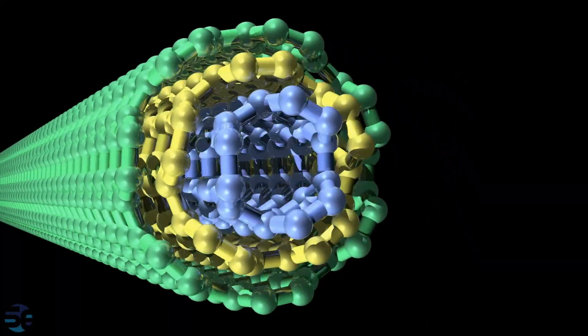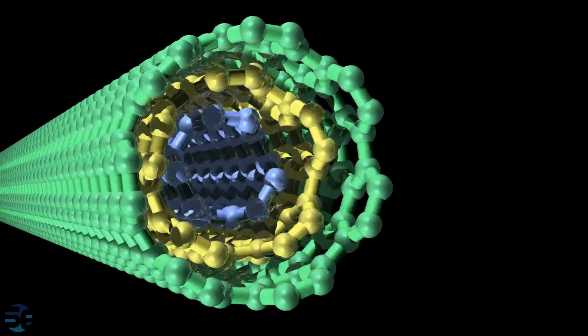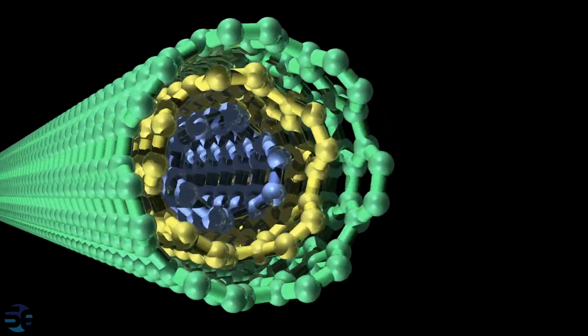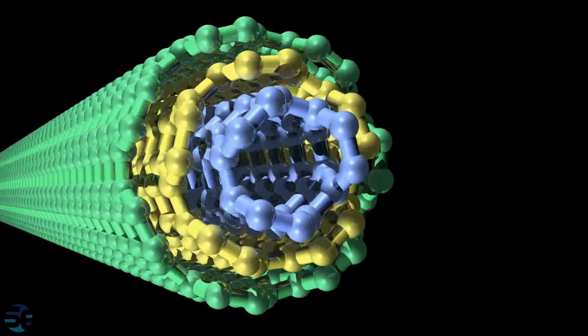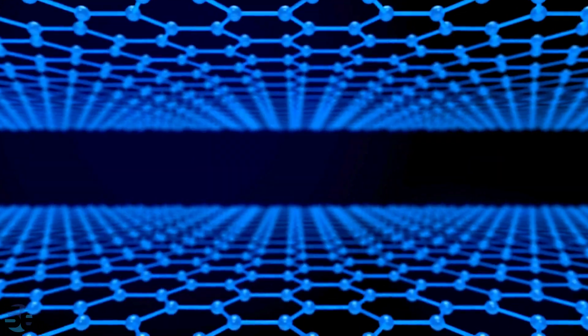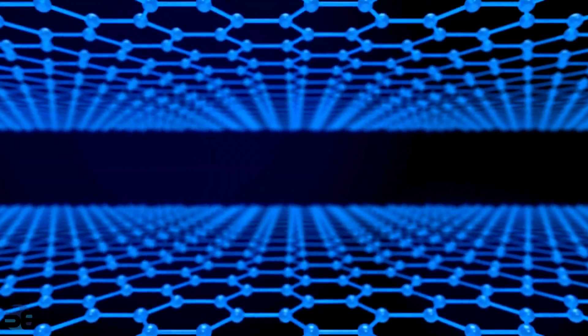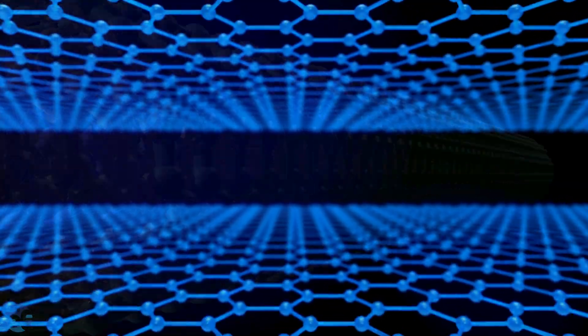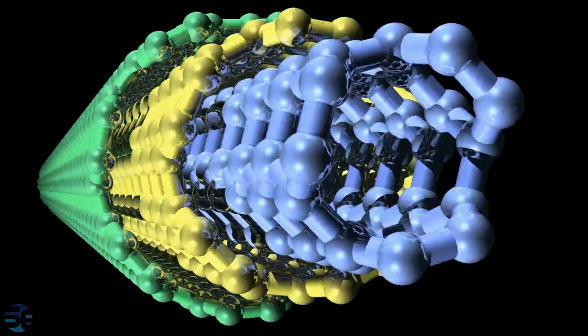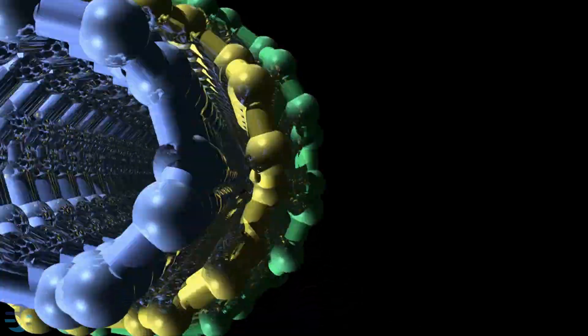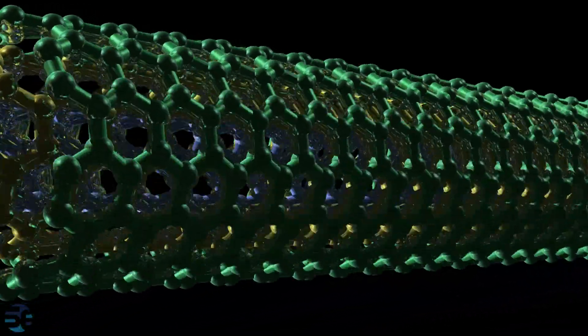Next, we have multi-walled carbon nanotubes, or MWCNTs. Unlike SWCNTs, MWCNTs consist of multiple layers of graphene arranged concentrically. MWCNTs offer excellent mechanical strength and thermal conductivity, making them valuable additives in composites, coatings, and other structural materials.